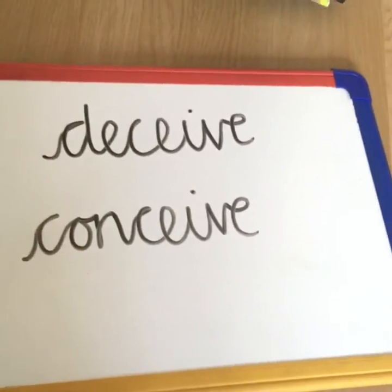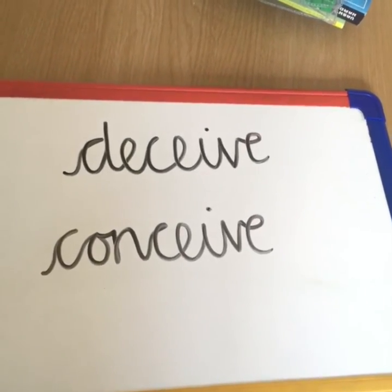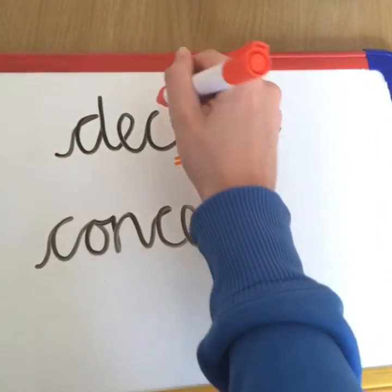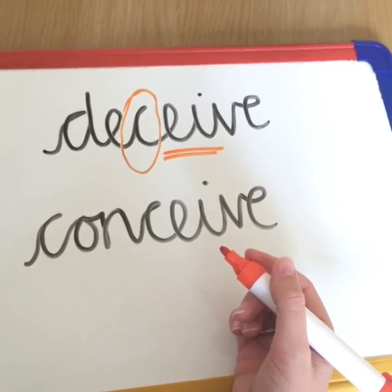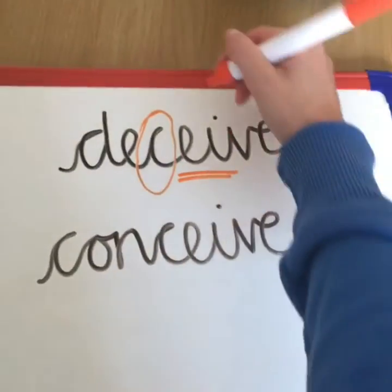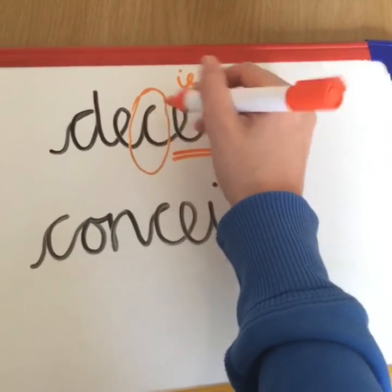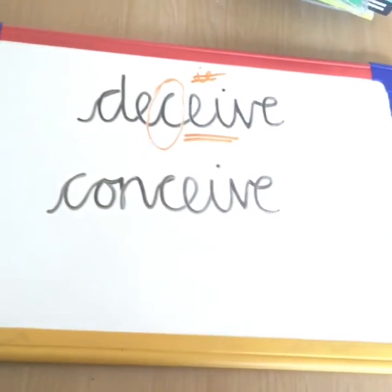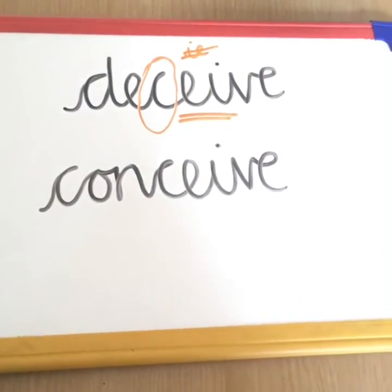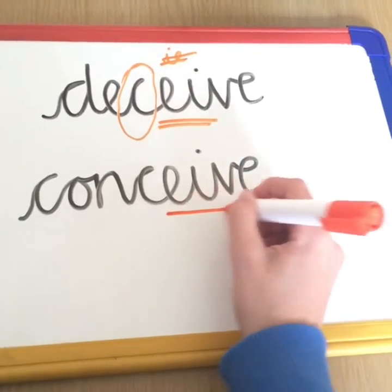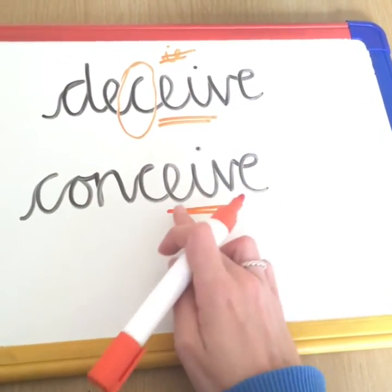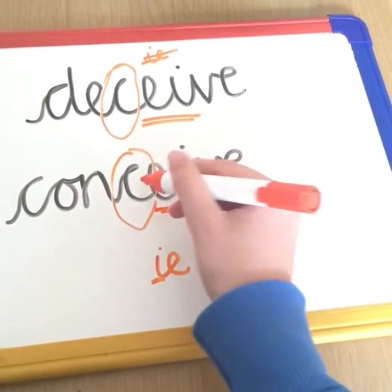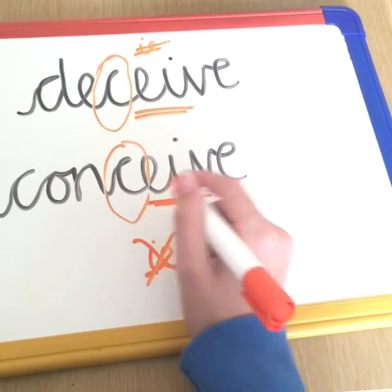Let's have a look at these words. If you deceive somebody, it means you trick them. In deceive, the E sound comes after the letter C, so it's I before the E except after a C — which this is — so we switch the letters around, making it EI. With the word conceive, if you conceive a plan you think of or come up with a plan. Again, the E sound is after the letter C, so we switch the letters around and it's EI.